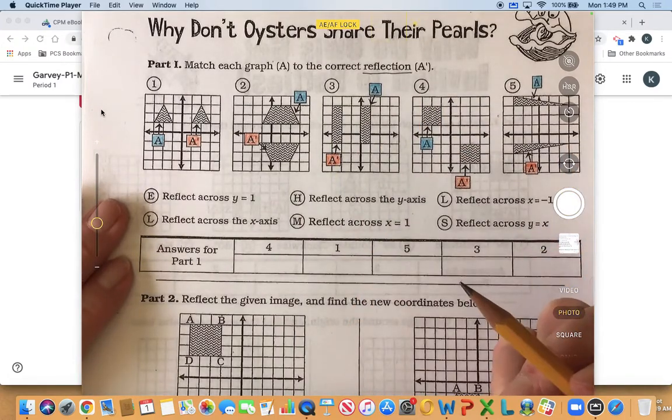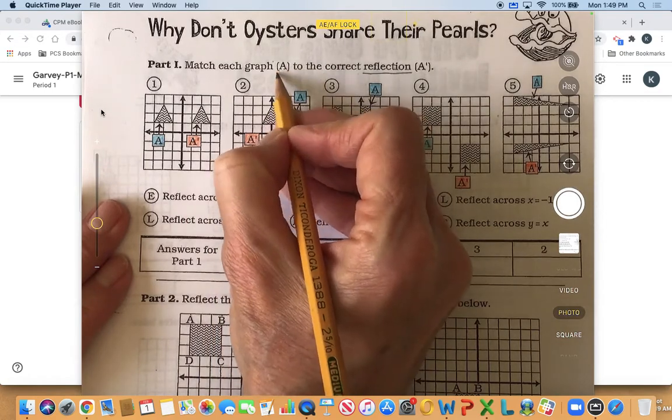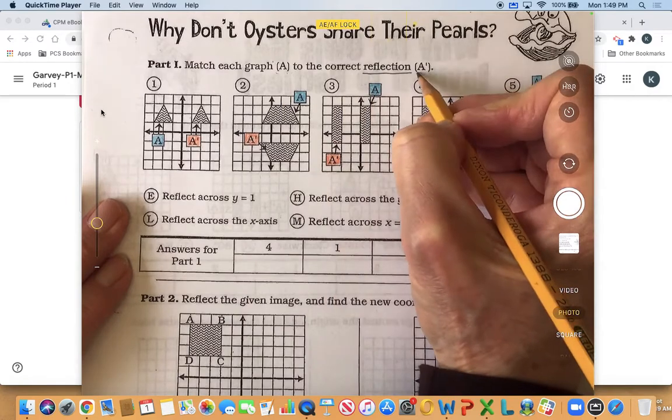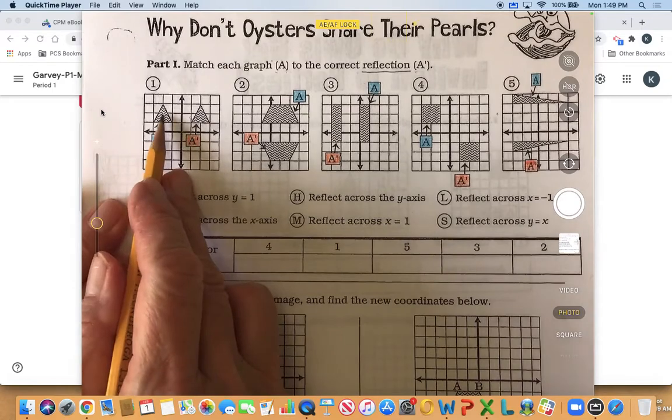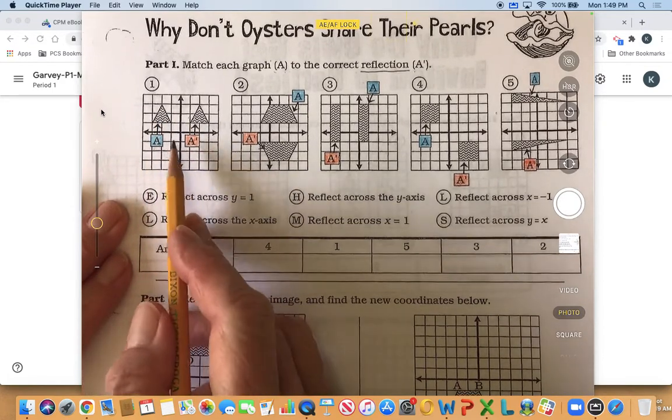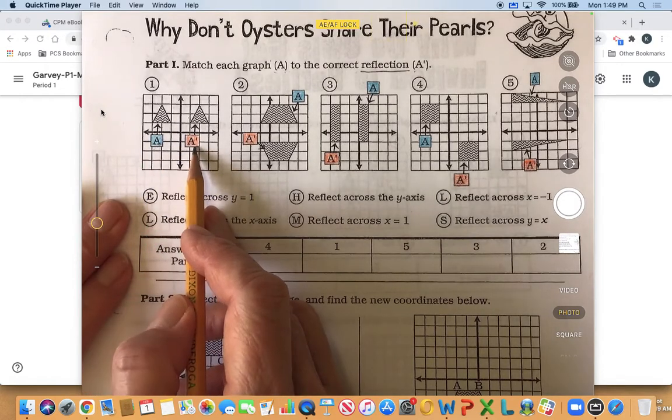Okay so that means match each graph and we've got an A with the correct reflection which is A'. So if we look here we can see there are two shapes A and A', so this was the original shape the A and this is the reflection the A'.